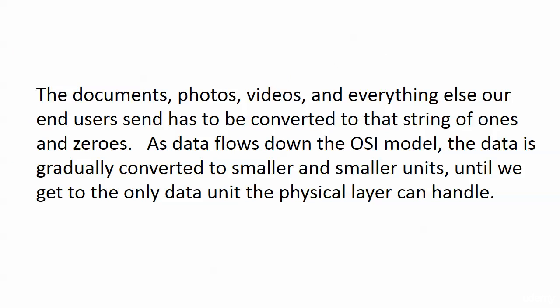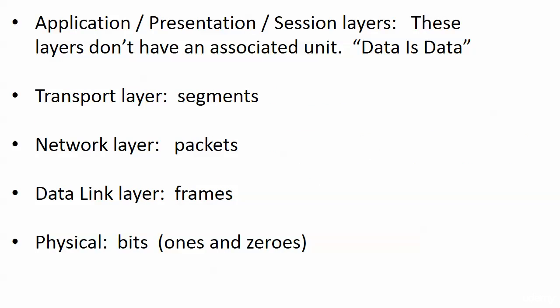All of the data our end users are inputting — whether documents, photos, or videos — has to be converted to a string of ones and zeros, and that's done bit by bit. As data flows down the OSI model, it is gradually converted to smaller and smaller units until we get to the only data unit the physical layer can handle: ones and zeros, or bits. This is important to recognize on your exam — if they're talking about segments, packets, frames, or bits, you're expected to know at which OSI layer those are found.